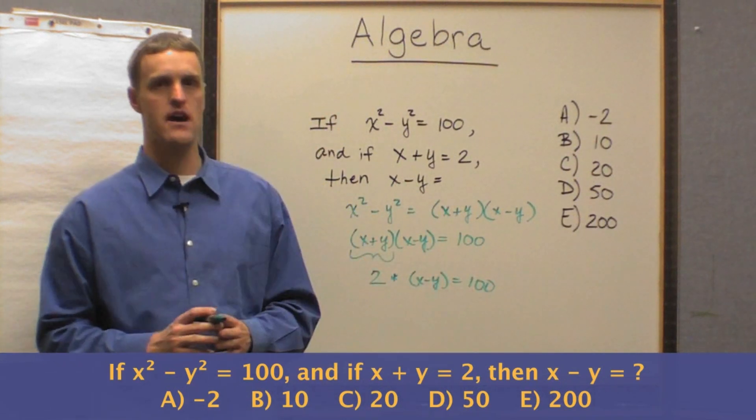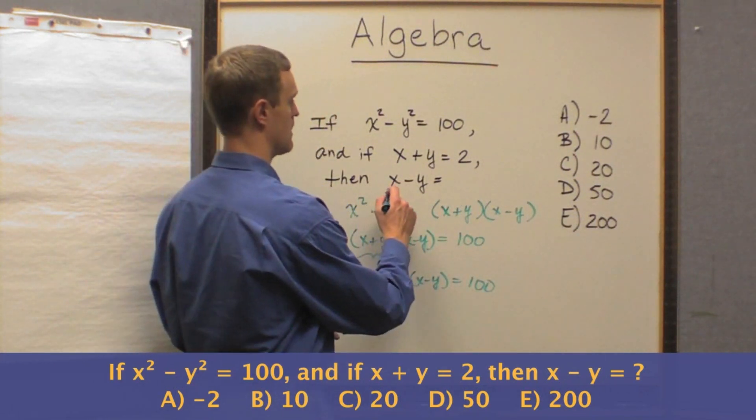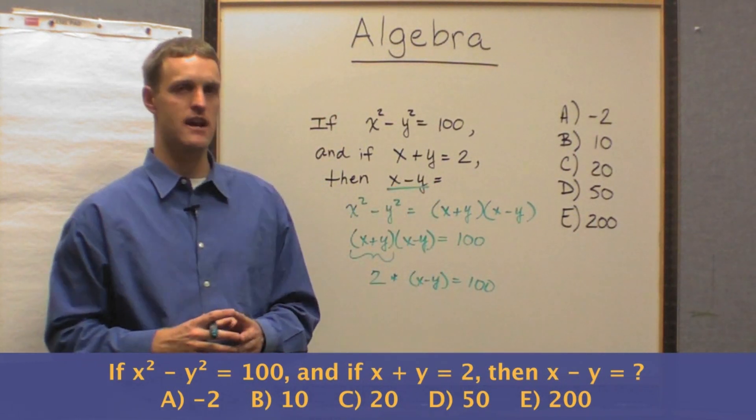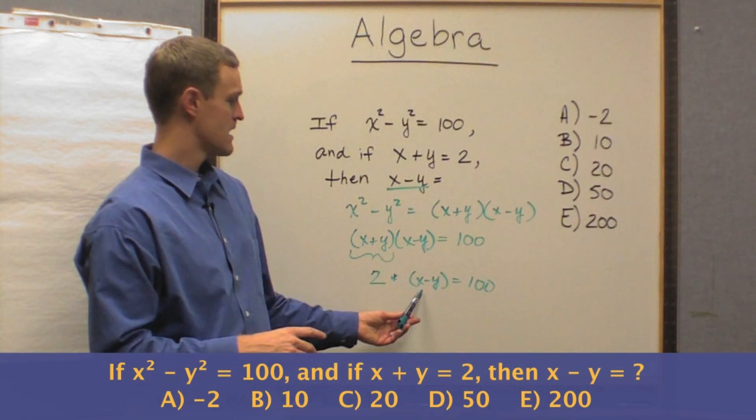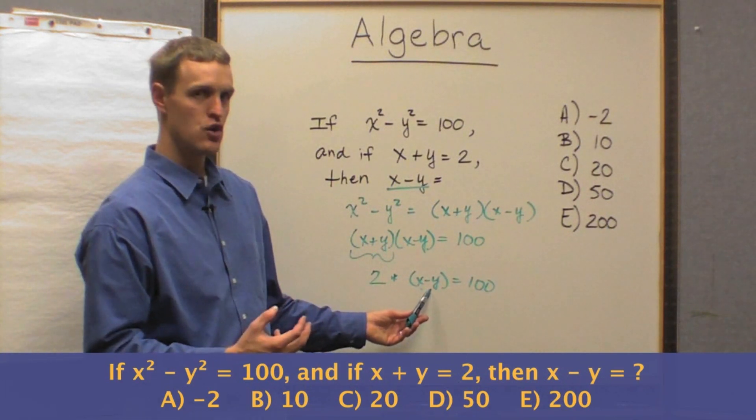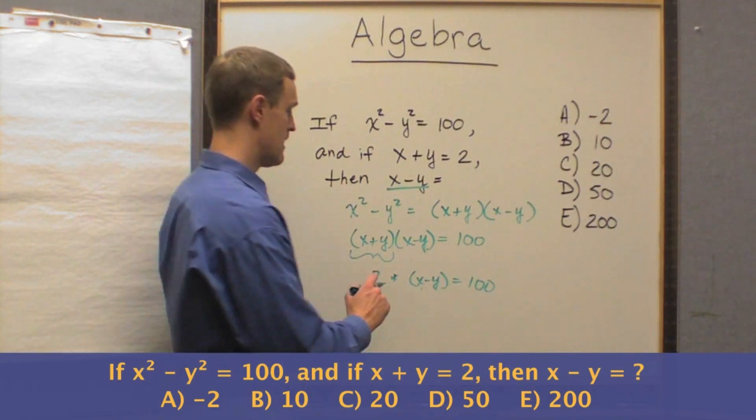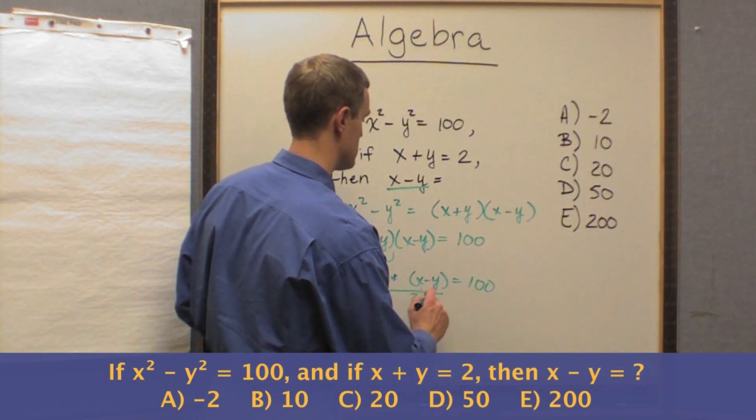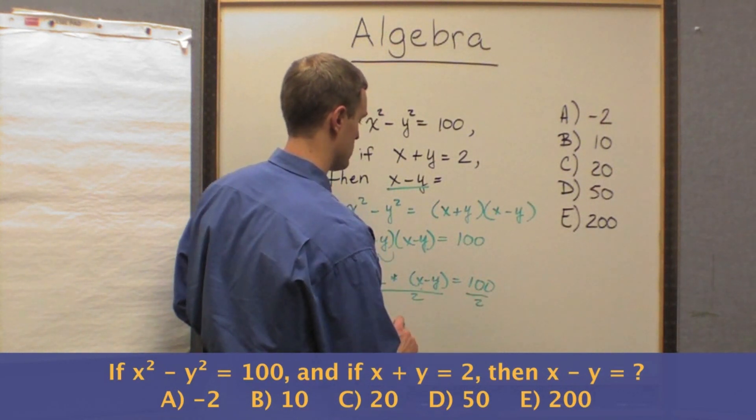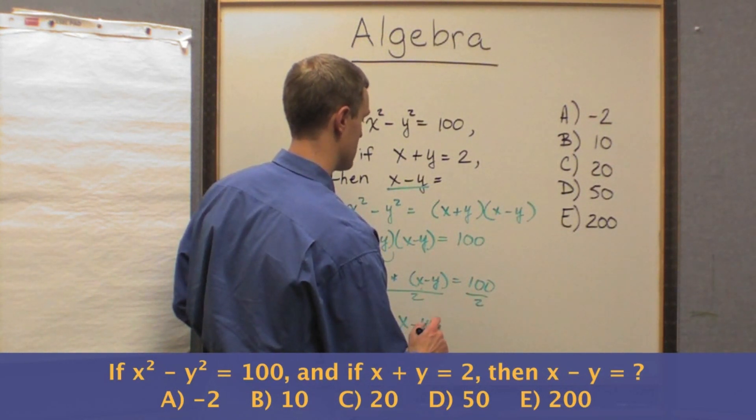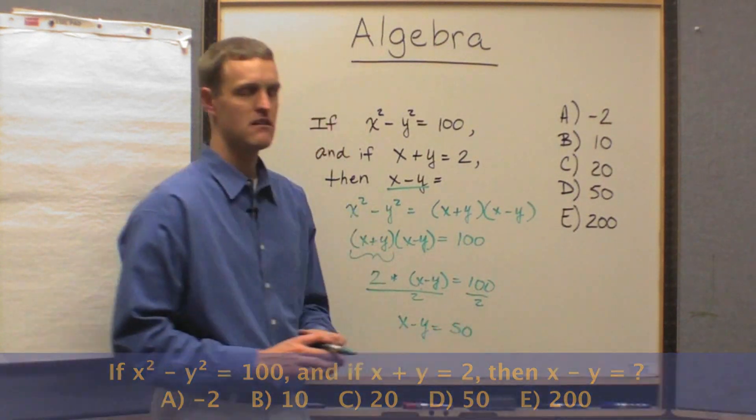So that times x minus y equals 100. And then what is the question asking? The question is asking, what then is x minus y? Well, x minus y is a term that will be isolated if we just divide both sides by 2. So that we're left with x minus y equals 50, right?